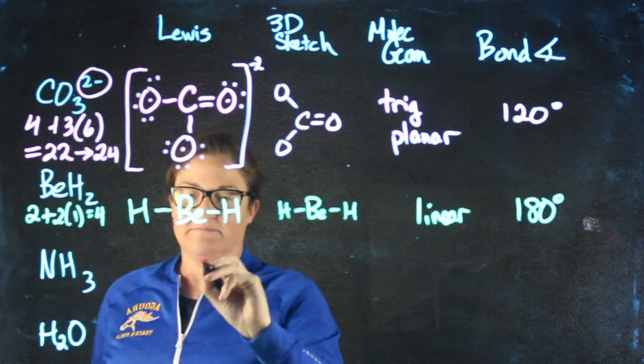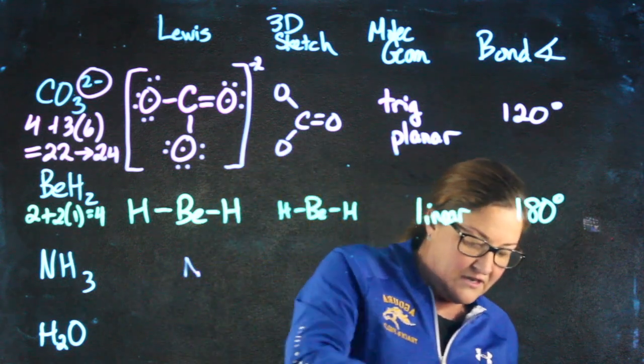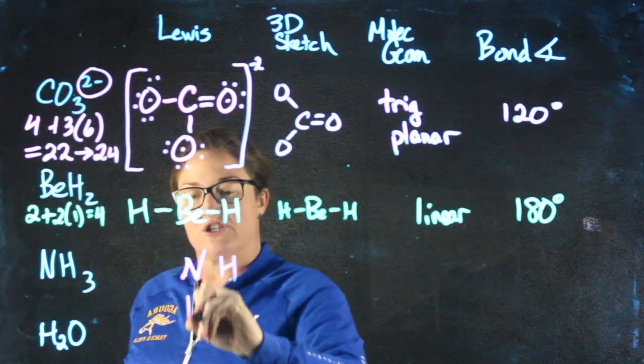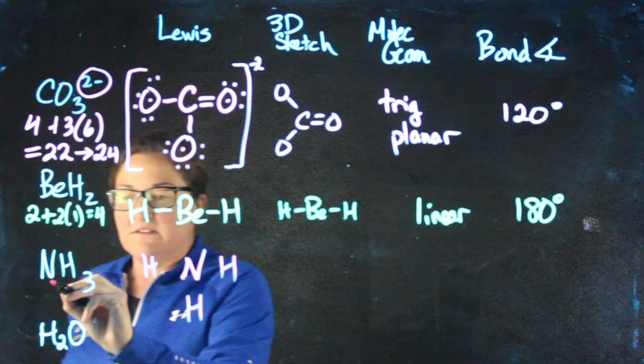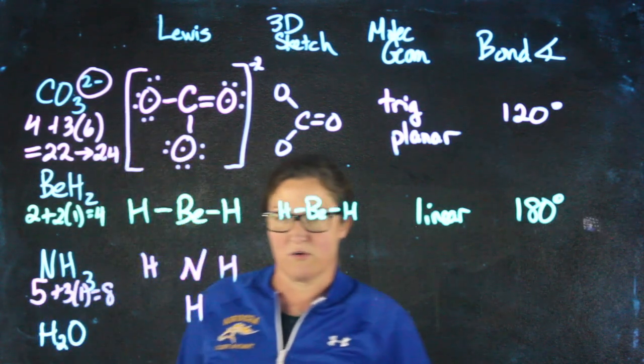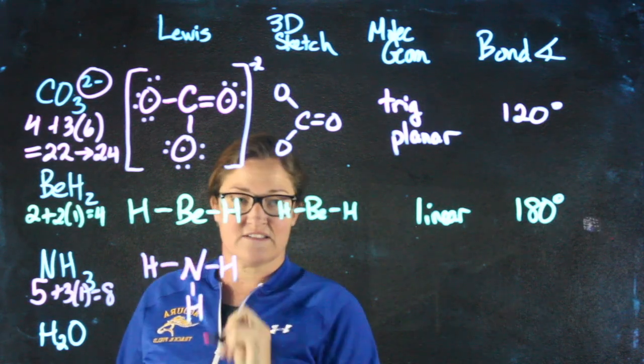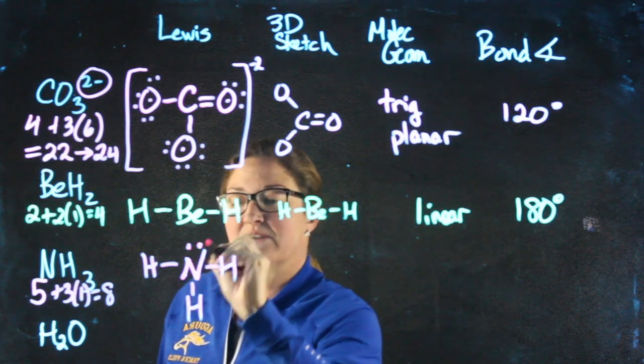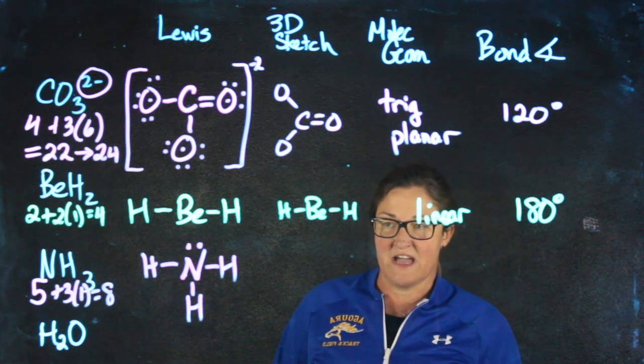Up next, NH₃. Nitrogen goes in the middle, hydrogen's attached to it. Valence electrons: nitrogen has five, each hydrogen has one, gives me a total of eight to work with. Starting off with single bonds: two, four, six. I have two more electrons to assign. They're going to go to nitrogen because hydrogen is full. And this Lewis structure is done.